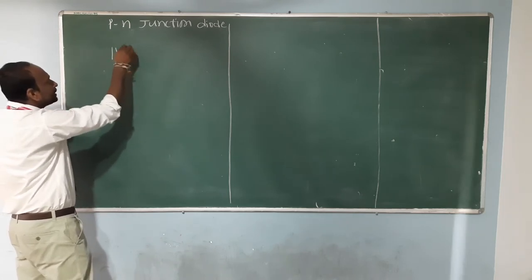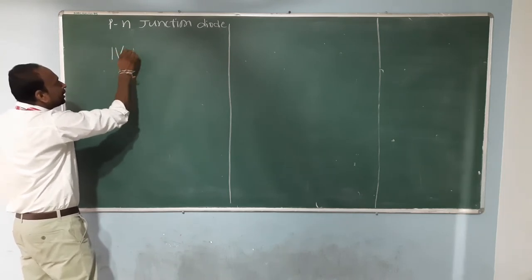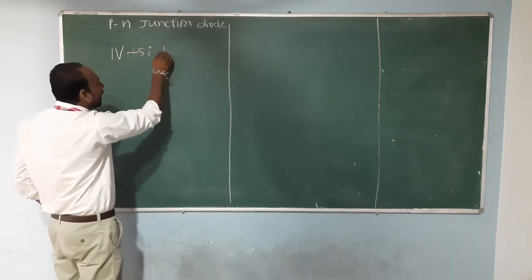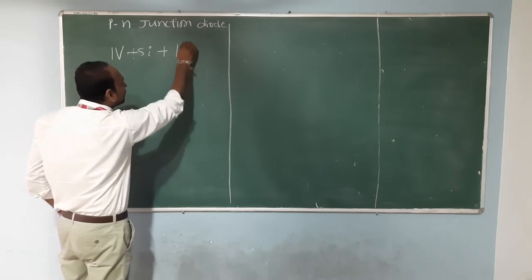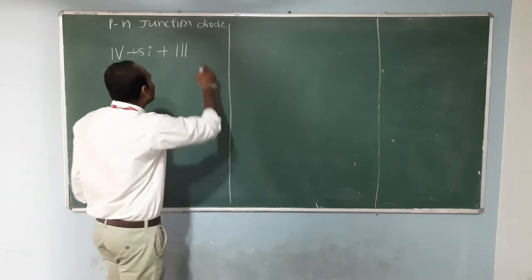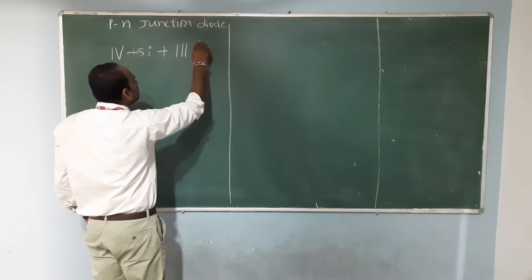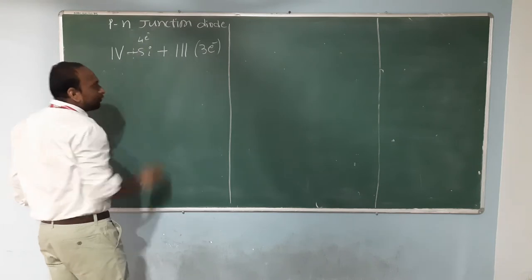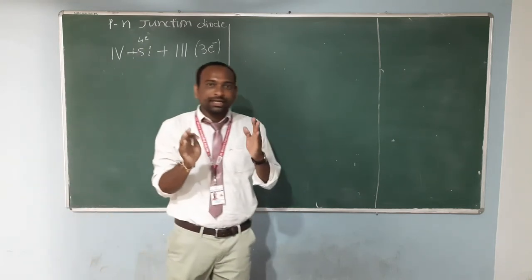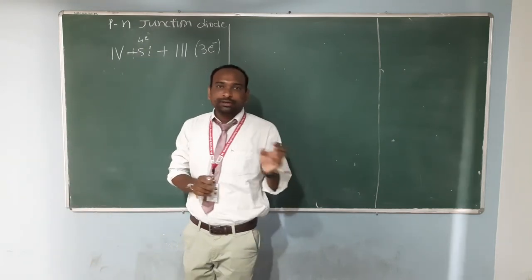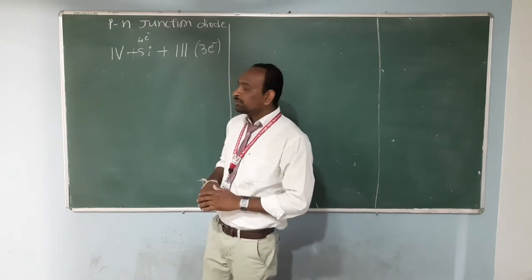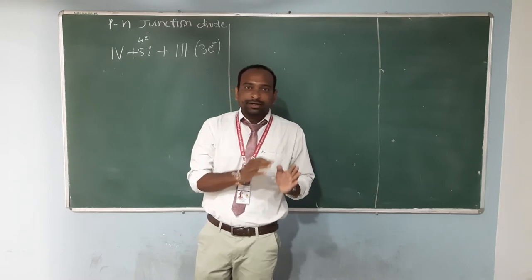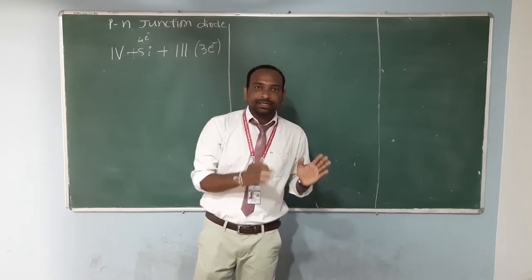Fourth group element means that is Silicon. For this Silicon atom, it has four valency electrons. When you add third group elements like Boron, Aluminium, Gallium — that is trivalent atoms having three valency electrons — Silicon having four valency electrons. When you add Boron atoms to this Silicon atom, this forms a P-type semiconductor.